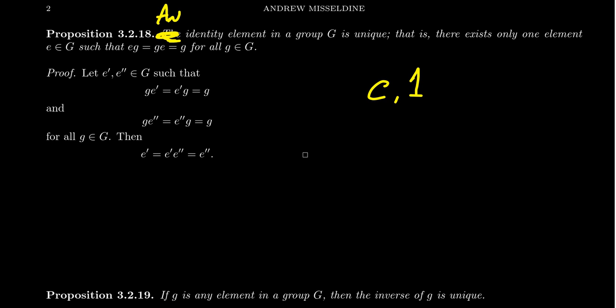How do we know there is only one identity? When you look at the axioms of a group, it just says there exists an element that has such and such property. It doesn't say that that element is unique. It turns out that for a group, the identity element is unique. That is, there exists only one element that has the property that EG equals GE, which equals G for all elements of the group.